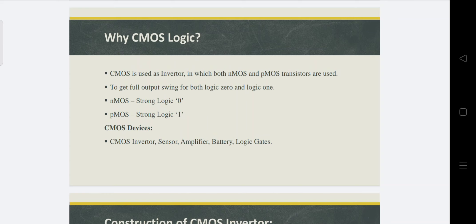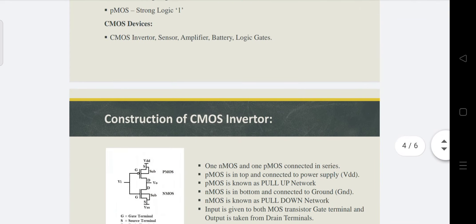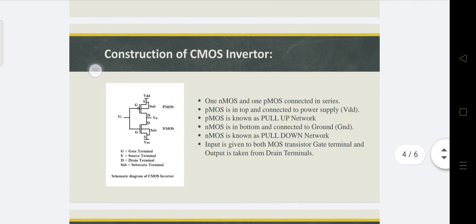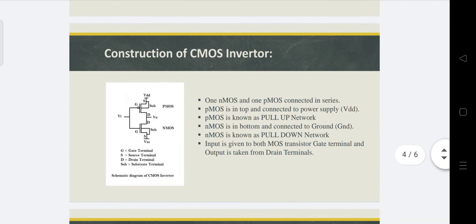Some CMOS applications are CMOS inverters, sensors and amplifiers, batteries, and some logic gates usually use this CMOS logic. Next, the construction of the CMOS inverter: we already know one NMOS and one PMOS are connected in series, which provides the CMOS inverter.